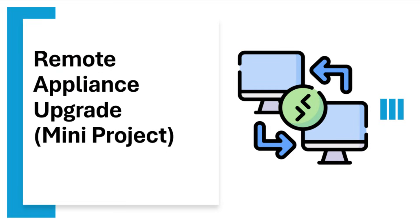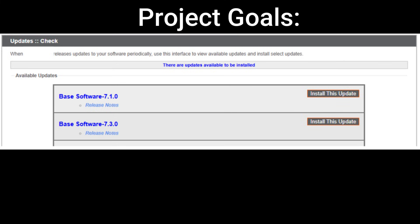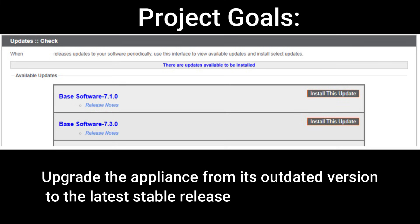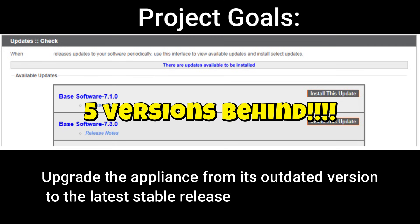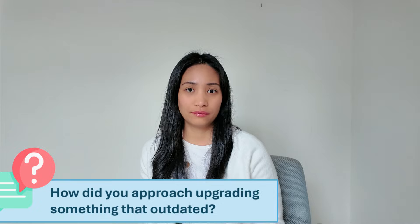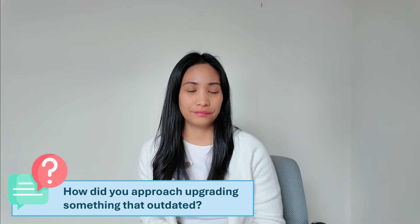Let's start with the first project: the remote appliance upgrade. The goal of this project is to upgrade the appliance from its outdated version to the latest stable release, because the appliance is five versions behind and can't be patched on its current version.